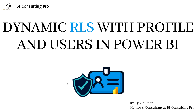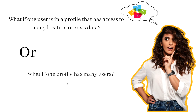Welcome to BI Consulting Pro. In today's episode we are going to discuss dynamic RLS with profiles and users in Power BI. What if one user in a profile has access to many locations or rows of data, or what if one profile has many users? For example, a manager who has access to multiple locations, or a location where multiple users are working — this creates a many-to-many relationship.